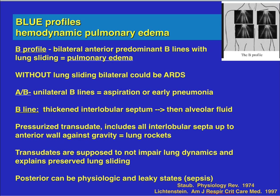If you have A lines on one side of the chest and B lines on the other side, that could indicate either aspiration or early pneumonia. A B line essentially is a thickened interlobular septum, which then becomes alveolar fluid — it's a pressurized transudate. It includes all interlobular septa up to the anterior wall against gravity. Transudates are supposed to not impair lung dynamics, and that explains preserved lung sliding.